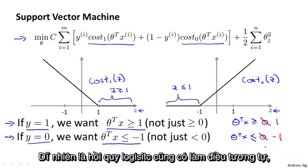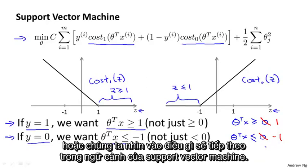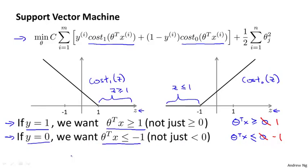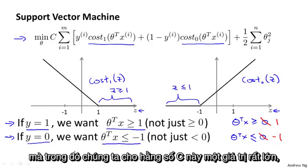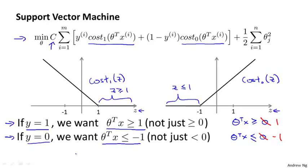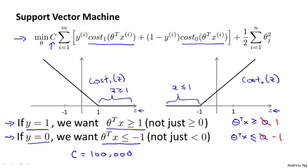Logistic regression does something similar, of course, but let's see what the consequences of this are in the context of the support vector machine. Concretely, what I'd like to do next is consider a case where we set this constant C to be a very large value — maybe 100,000, some huge number — and let's see what an SVM will do.